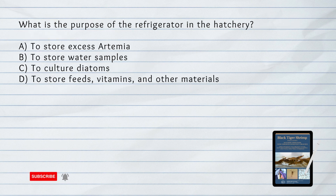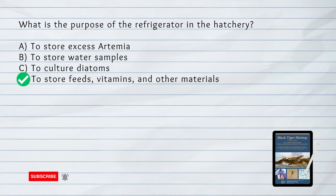What is the purpose of the refrigerator in the hatchery? A. To store excess artemia. B. To store water samples. C. To culture diatoms. D. To store feeds, vitamins, and other materials. Answer: D. The refrigerator is required to store feeds, vitamins, fertilizers, and other materials needed for hatchery operations.